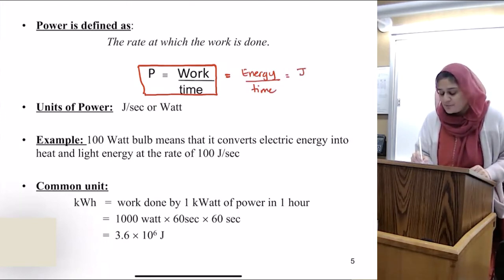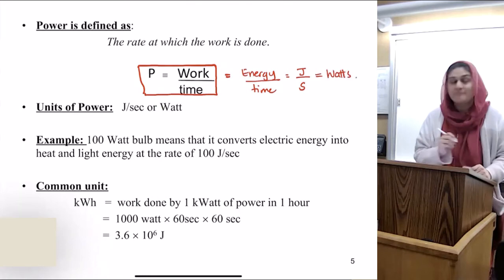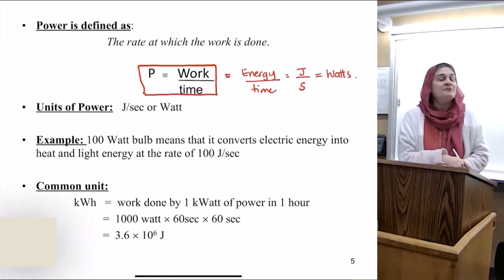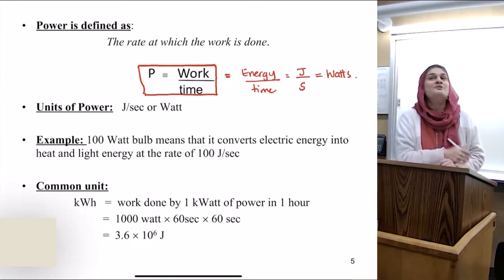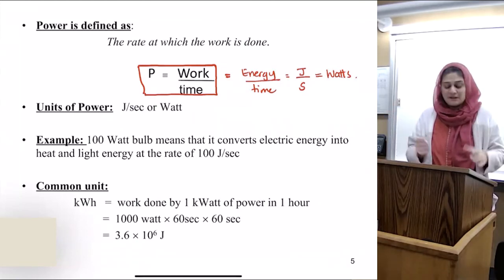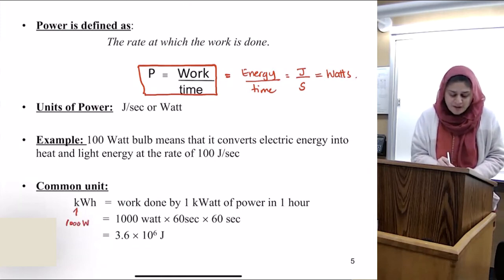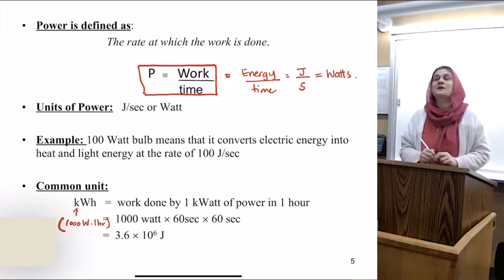The units of energy were joules. The units for time are seconds. So the units are called watts. A very common unit that you will see on your electric bill is called kilowatt hour. And what that means is 1,000 watts of electricity that you use in one hour. Kilowatt hour means 1,000 watts in one hour. It basically equals 3.6 times 10 to the 6 joules. So 3.6 million joules is one kilowatt hour.